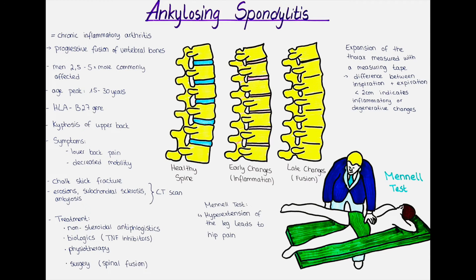How can we treat ankylosing spondylitis? Initially, non-steroidal anti-inflammatory drugs and biologics are the medications of choice. Biologics are usually tumor necrosis factor inhibitors, which reduce the pain and stiffness of the vertebra and increase mobility. Together with pharmacological treatment, physiotherapy is also important to maintain mobility as long as possible.